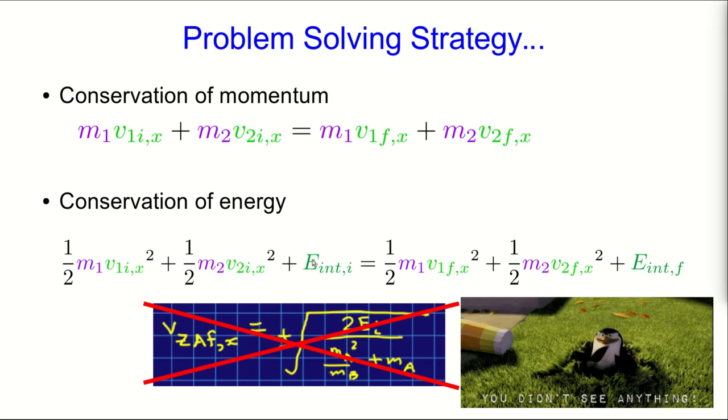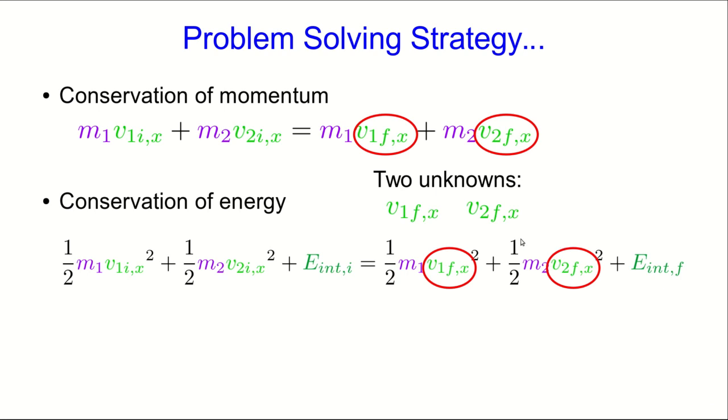We had a case where this system started with some internal energy and ended up with none, and we wanted to know these two velocities. And we were able to work out this equation. But what if we gained internal energy instead of losing it? Or what if the unknowns were a different pair from what I just went through? That equation wouldn't have been useful at all.